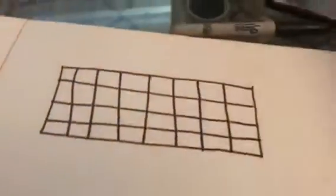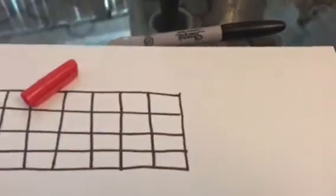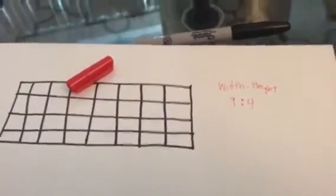So if we're writing the ratio for the width to height, our ratio is nine to four. And I'm sure you got that one for the first problem for 3a. So now let's go back and read 3b.